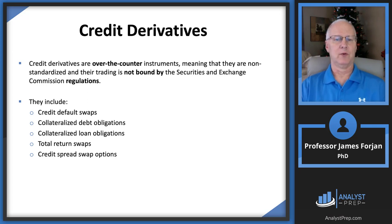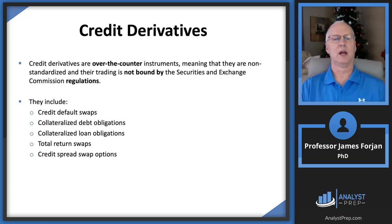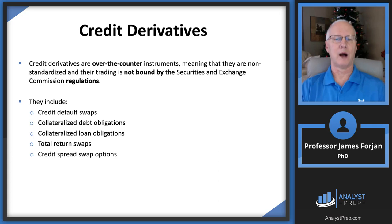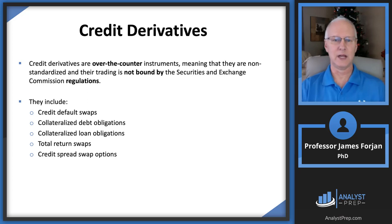Examples include credit default swaps, collateralized debt obligations, collateralized loan obligations, total return swaps, and swaptions. Importantly, credit derivatives are over-the-counter instruments, meaning they are not standardized as nearly as much as those traded on an organized exchange.